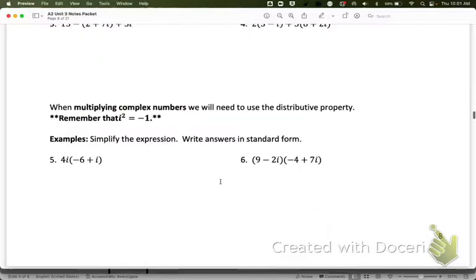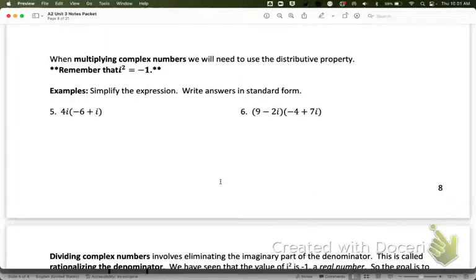Moving on to multiplying complex numbers. One thing that we talked about in the last section is that i squared is equal to negative 1. Now when we multiply, we have to use our properties of exponents. When we multiply x times x, we add the exponents and we get x squared. So the same thing happens here. If I multiply i times i, I get i squared. And because i squared means the square root of negative 1 squared, i squared is equal to negative 1. So anywhere that we end up with an i squared in our expression, we're going to need to replace it with a negative 1. So when we are multiplying, we're just going to distribute, but just remember that an i times another i is going to give us i squared.